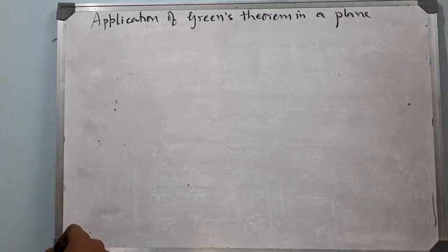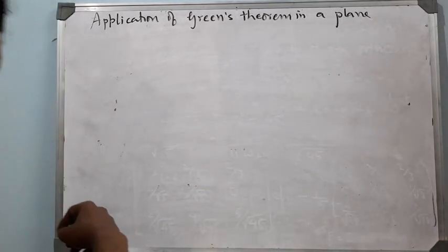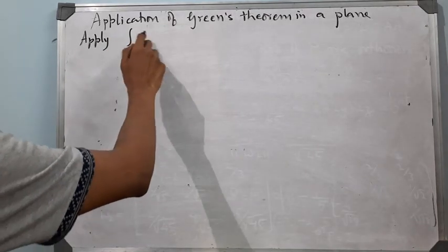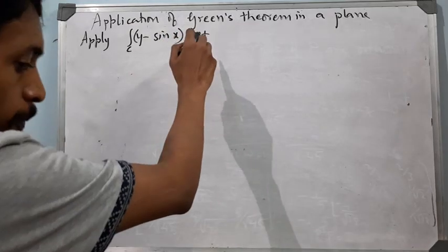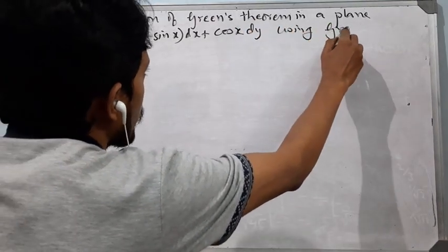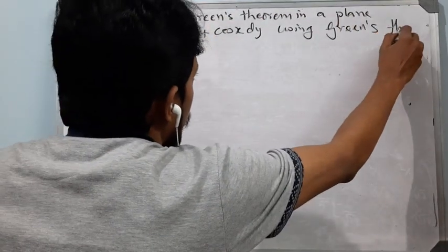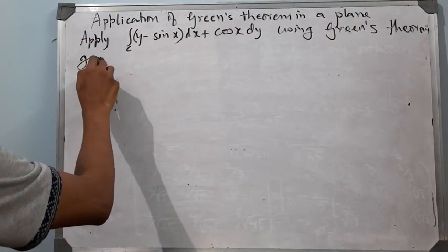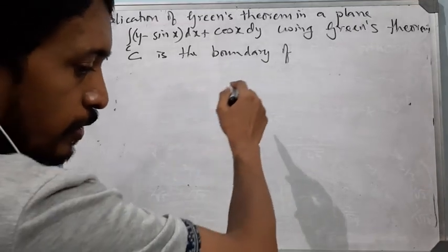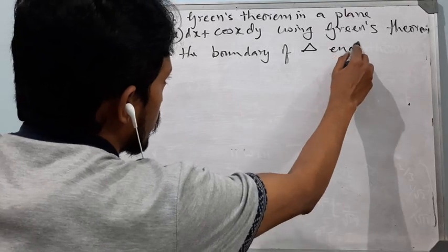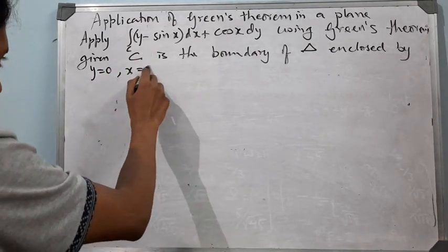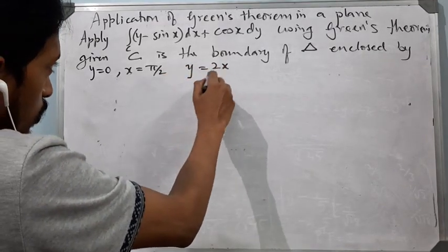Hello students. In this video I'll be discussing the application of Green's theorem in a plane. To begin with, let us evaluate a line integral using Green's theorem, given C is the boundary of the triangle enclosed by y = 0, x = π/2, and y = 2x/π.